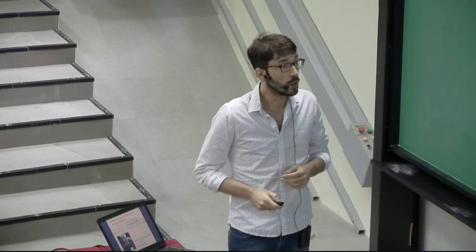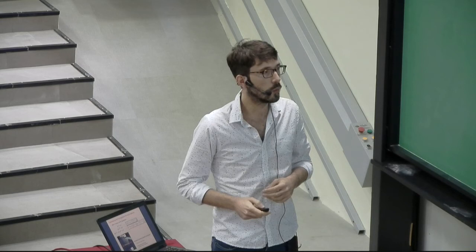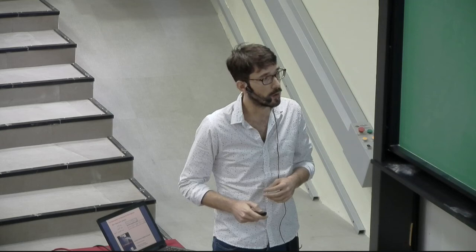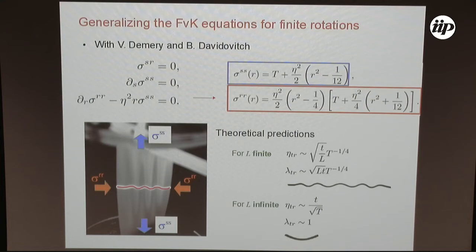Now that we have all the ingredients, we balance the compression in the transverse direction, the buckling out of plane, and the effect of tension in the other direction. The prediction gives two regimes: for finite L, there is a scaling for the instability threshold and for the wavelength. For L going to infinity, the scaling doesn't depend on L, and in that case you have a buckle where the wavelength is more or less the width of the ribbon.